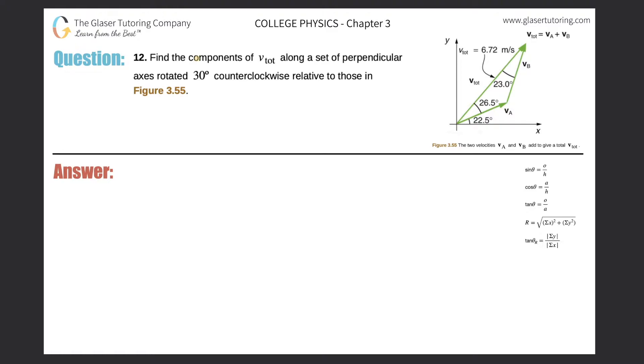Number 12. Find the components of the total velocity along a set of perpendicular axes rotated 30 degrees counterclockwise relative to those in figure 3.55.